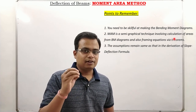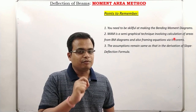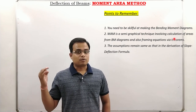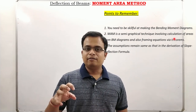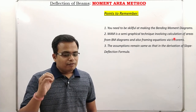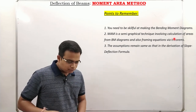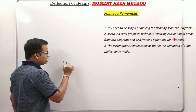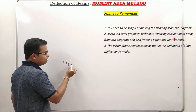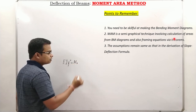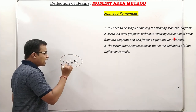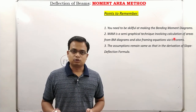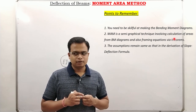Point number three: when we started making videos on deflection of beams, this is the eleventh video in this series. We have already covered methods in the form of double integration and Macaulay's method. This is the third method we are discussing. When we derived the first formula, the slope-deflection formula, we had EI y'' = M(x), where y double dash is d²y/dx².